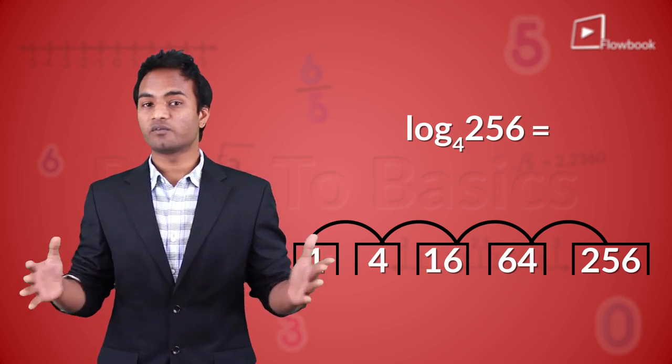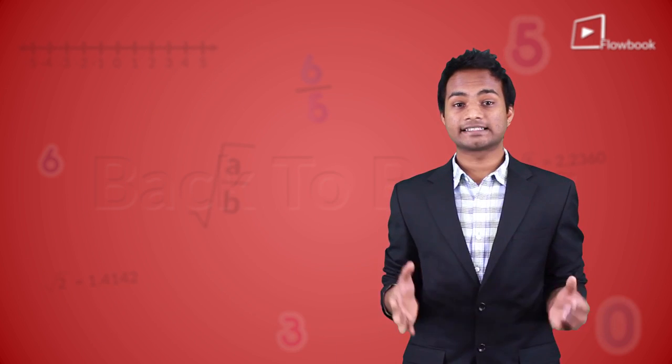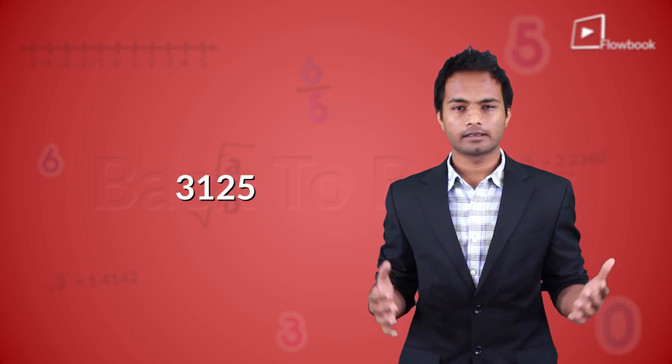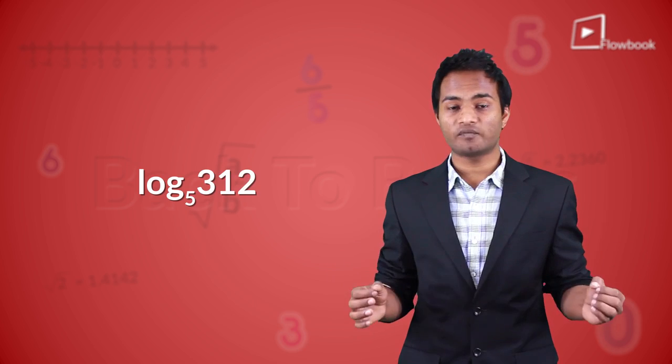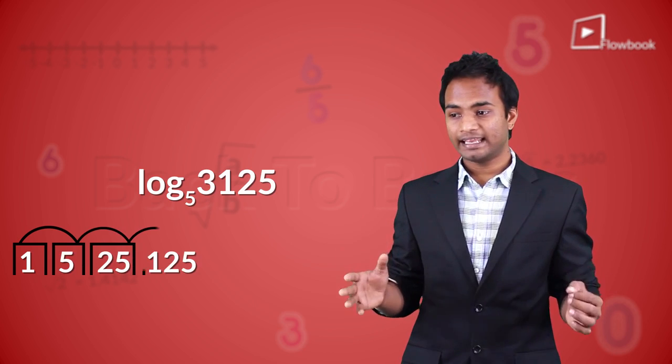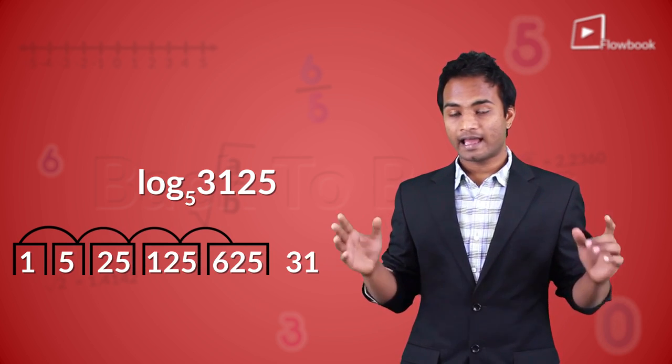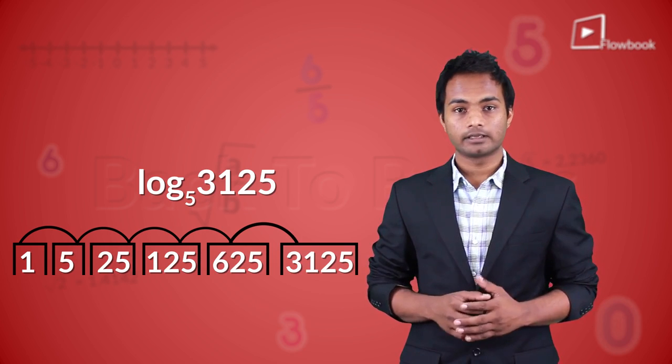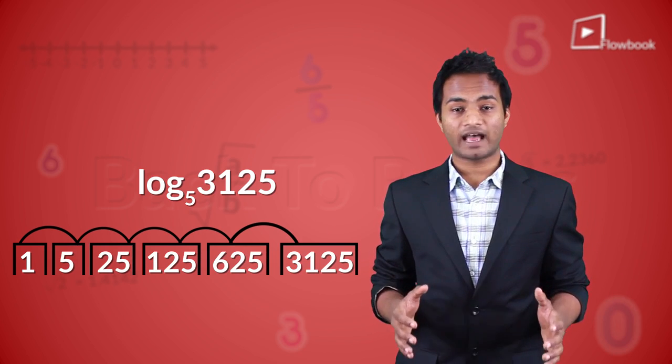That's why log 256 to the base 4 is 4. Now take another example — a system that's multiplied by 5. In this system, if you want to reach 3125, that means log 3125 to the base 5. How many steps do you need? You need 1, 2, 3, 4, and 5.